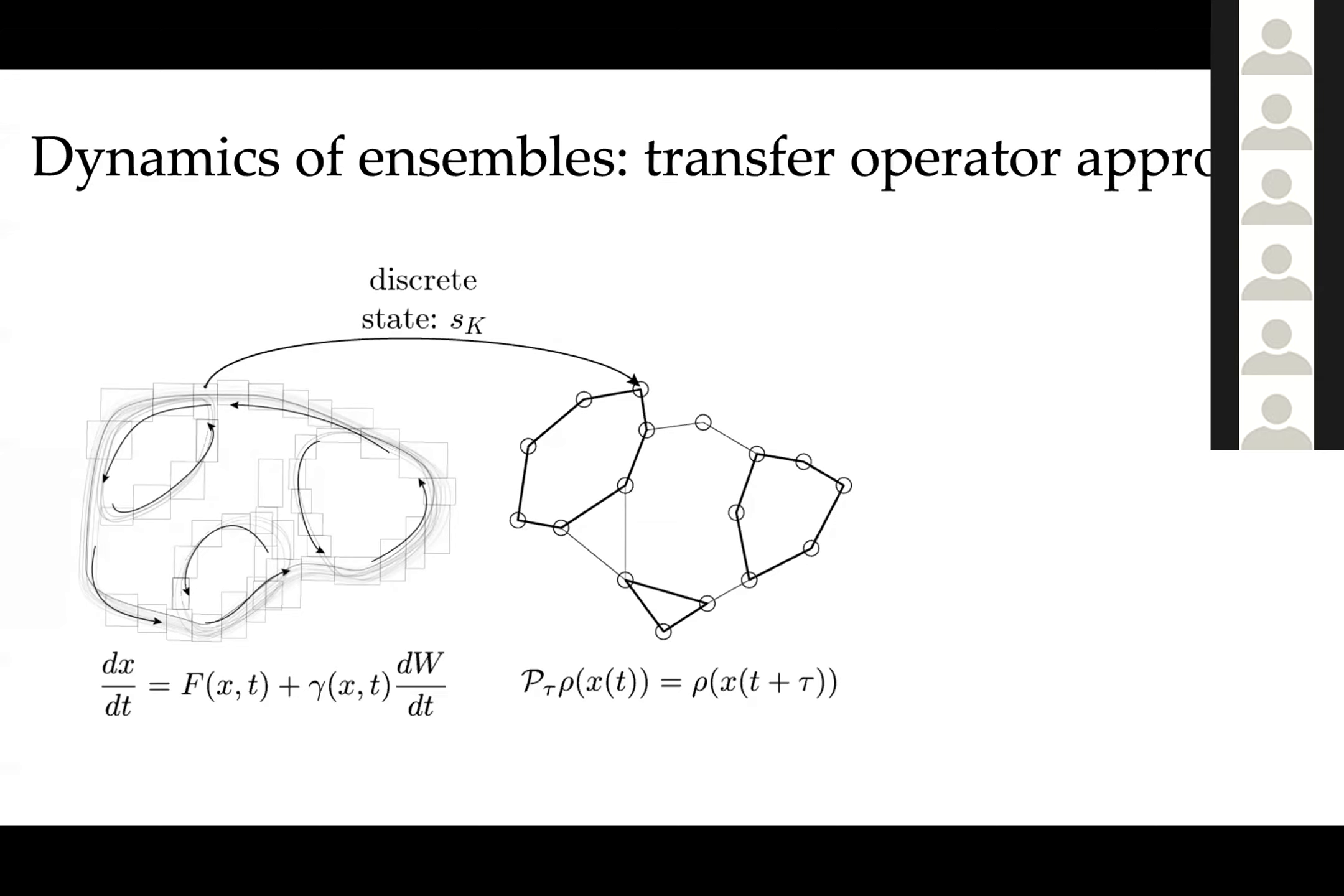Instead of focusing on the trajectories themselves or working directly with the differential equation, what we will do is work with the statistical description of the dynamics. We'll look at the evolution of phase space densities or ensembles of points in phase space through the language of the Perron-Frobenius operator, which is this object here on the right, which evolves densities in time by timescale tau.